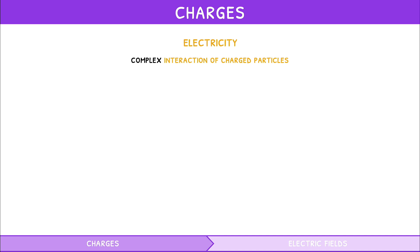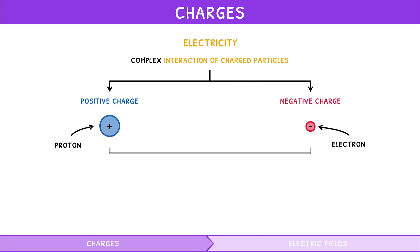If you remember, there are two types of charge, positive charge, found in protons, and negative charge, found in electrons. Neutral charge, found in neutrons, is the presence of equal amounts of positive and negative charge.